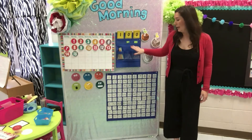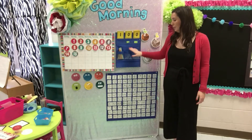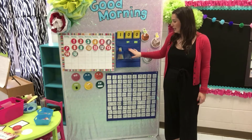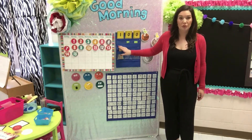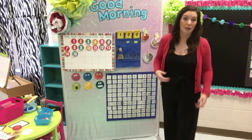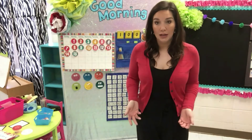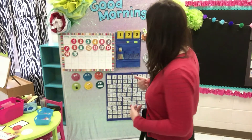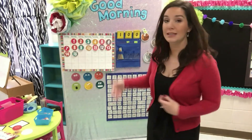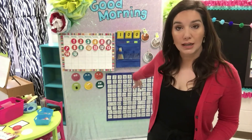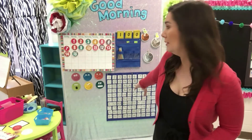If I have 10 ones I have to bubble them up and move them over to the tens. If I have 10 tens I have to move them over to the hundreds column. Ten tens is 100, ten ones is 10, and then the rest of the ones just get left in the ones column.